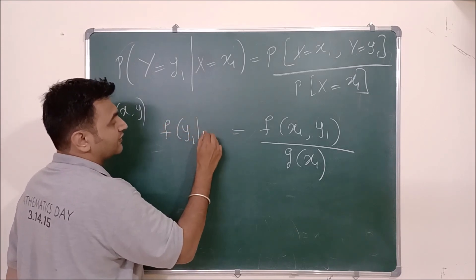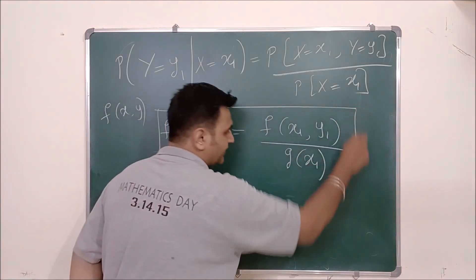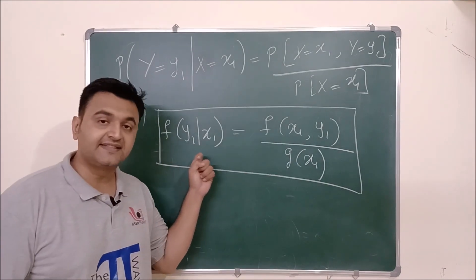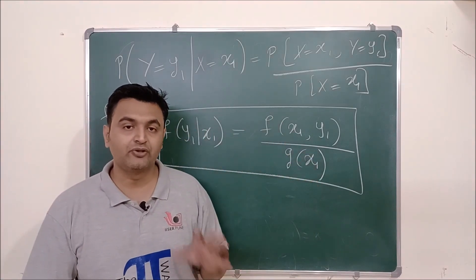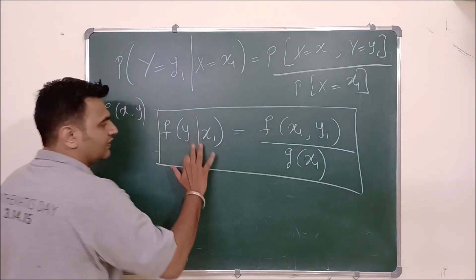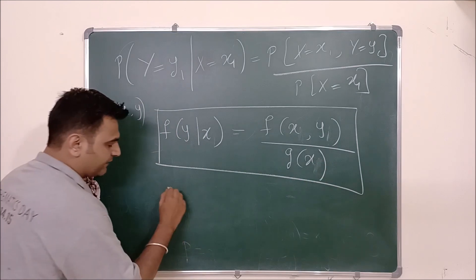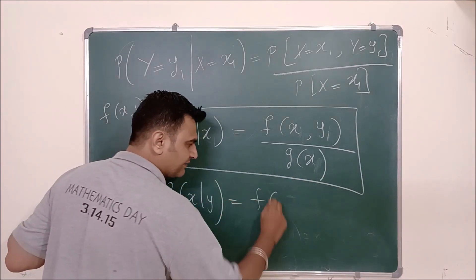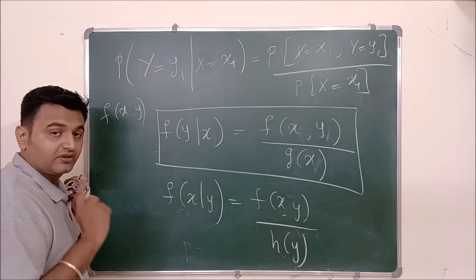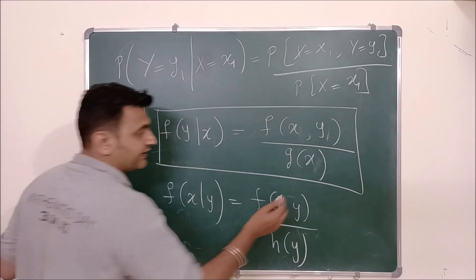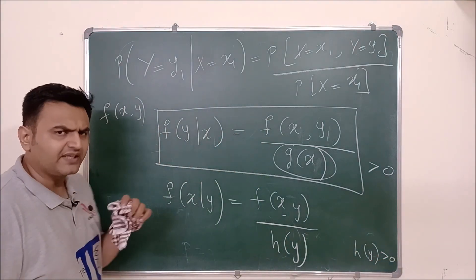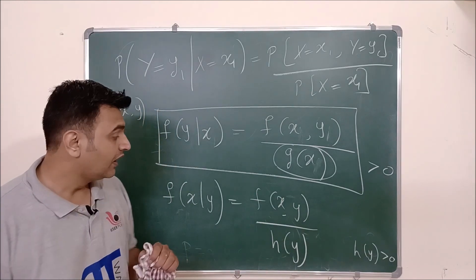So the conditional distribution — the probability that Y takes value y₁ given X takes value x₁ — is f(x₁, y₁) divided by g(x₁). This is the formula you see directly in the textbook, but now you know how to arrive at it. Similarly, the conditional distribution of X given Y is f(x,y) divided by h(y), the marginal distribution for Y. We require g(x) > 0 and h(y) > 0 since we are dividing.